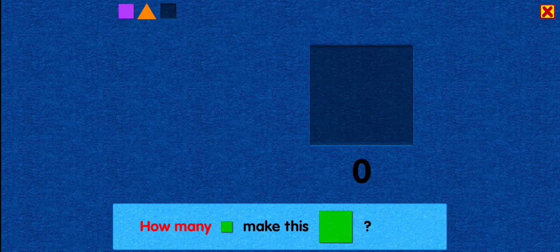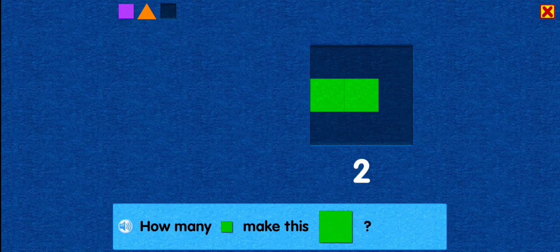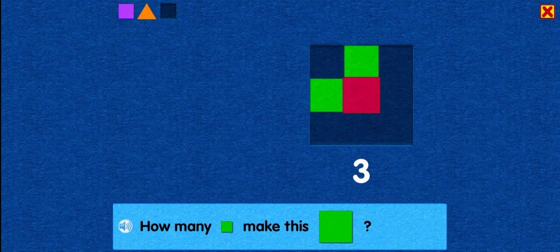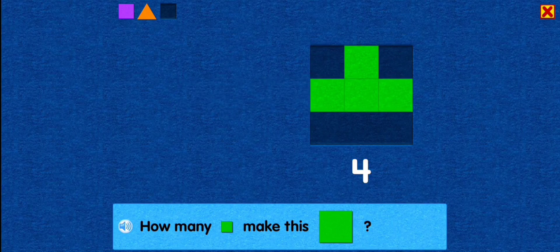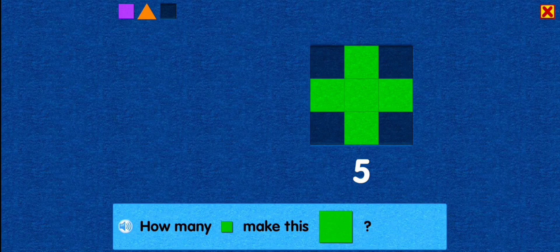How many squares make this square? One. Two! Nice! You placed this square next to the center square. Three! Nice! You placed this square above the center square. Four! Great! You placed this square next to the center square. Five! That's right! You placed this square below the center square.